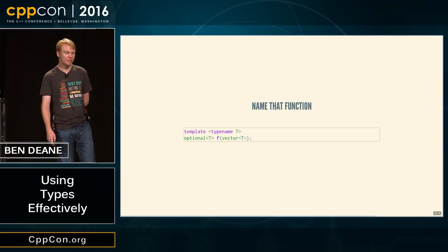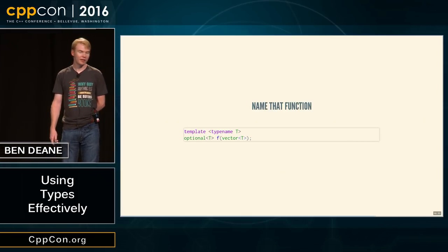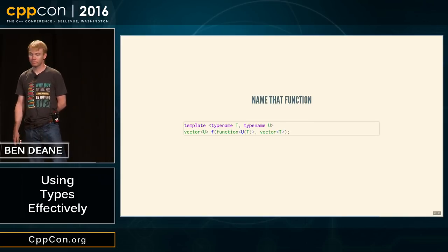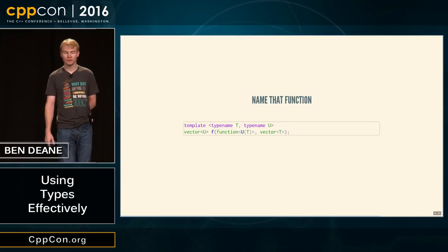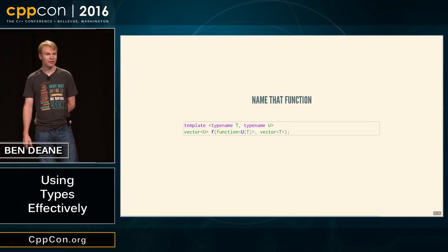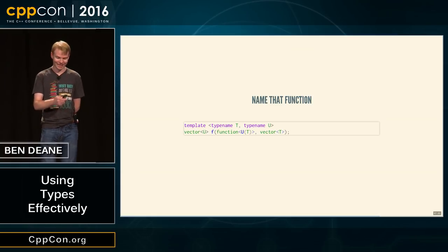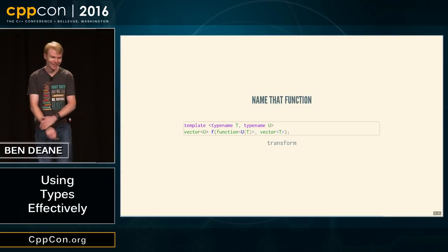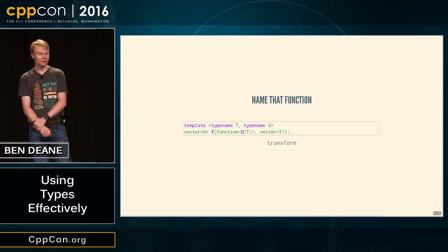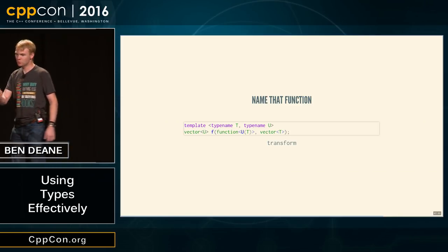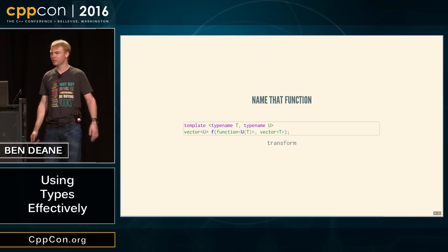Perhaps if we were writing STL2, we would look at something like f(vector<T>) returning optional<T>, and call it 'front'. How about f(vector<T>, function<U(T)>) returning vector<U>? 'Map', say the functional programmers; 'transform', say the C++ programmers. A vector of T's, a function to make T's into U's, and we give back a vector of U's.